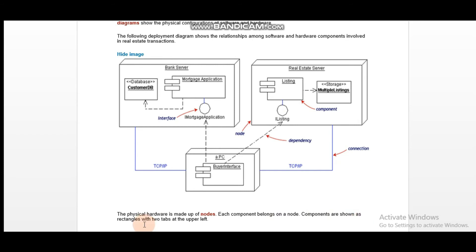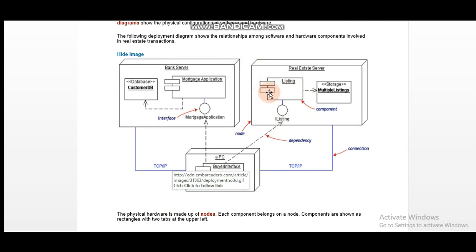Components are shown as rectangles with two tabs at the upper left. How do we know that this is a component? Basically this is a rectangle with two tabs given — one is here and one is here — and these two tabs are always on the upper left side. We will say that this is a component, so this is a diagram where we have a rectangle given and there are two tabs on the upper left side.